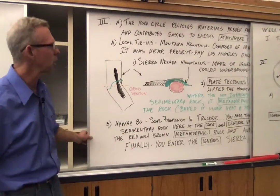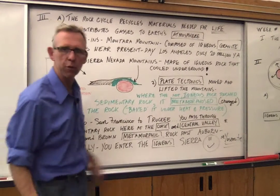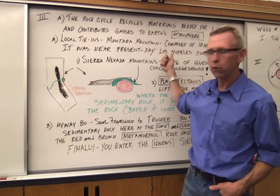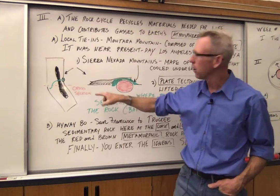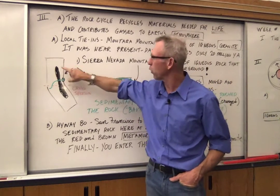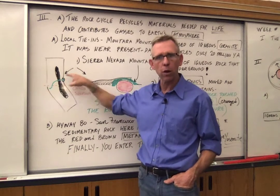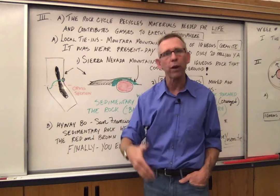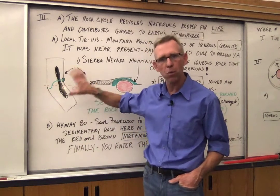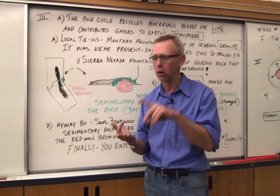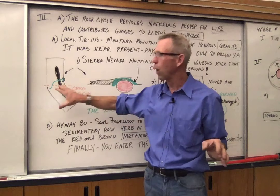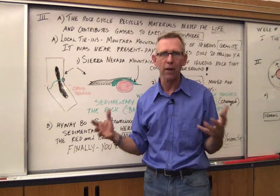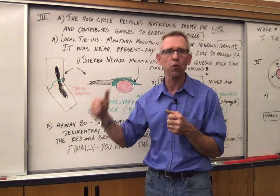Moving on, I wanted to talk specifically about some of the things you see right here in California. The rock cycle contributes materials we need for life. I've drawn a line from San Francisco up towards the Sierra. Many of us, at one point or another, might do a drive from the Bay Area up to somewhere in the mountains — Tahoe, Truckee, Auburn, maybe Yosemite. If you ever have the opportunity to do that, it's like a geologist's dream — a fantastic place to see all the different types of rock in action.